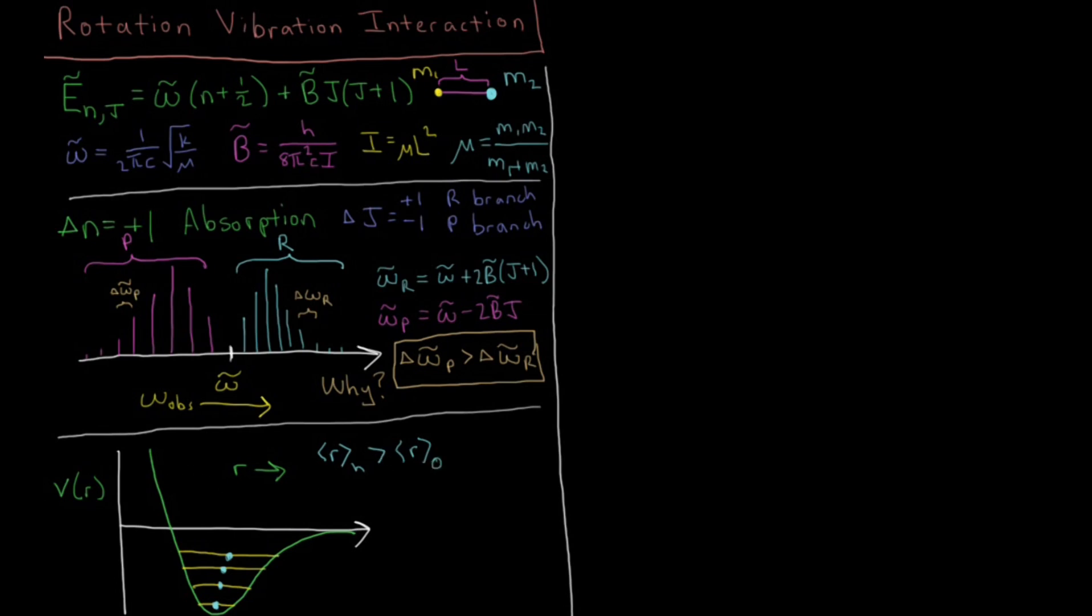And because of this we have an effect which alters these energy levels of rotation as a function of the vibrational energy level. So we can look at these in terms of now our E̅ of n and j is that same function of vibration ω̅ times n plus one half. But now our rotational constant B depends on the vibrational quantum number n, and that would still be n times j times j plus one.